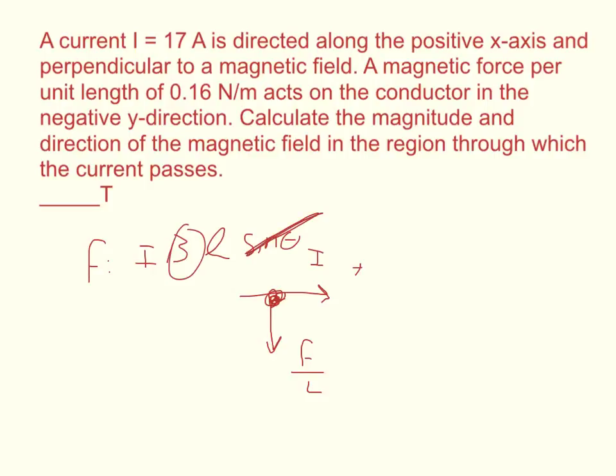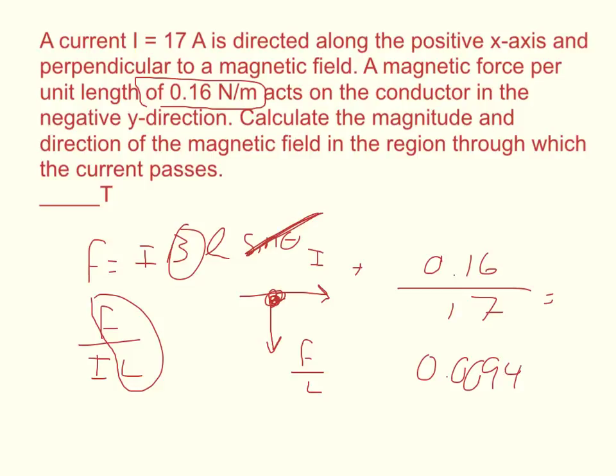So in order to find the magnetic field, I need to take F over I times L. In this case, the problem gives us F over L. And so it gives us this. We just got to divide that by I. So we have 0.16 newtons per meter divided by 17. And that should equal 0.009412 tesla.